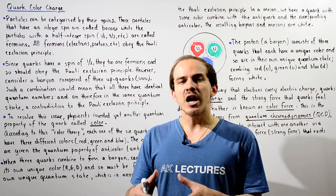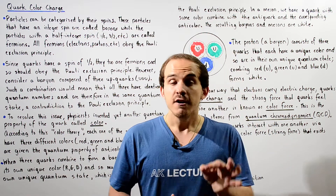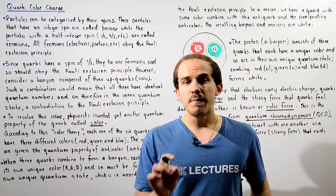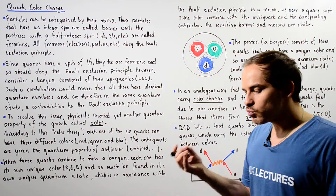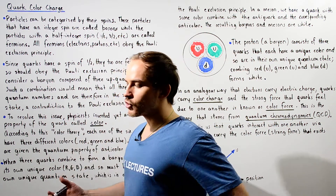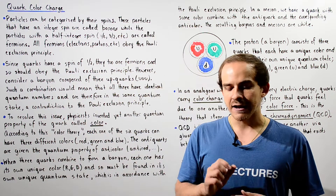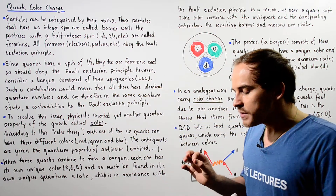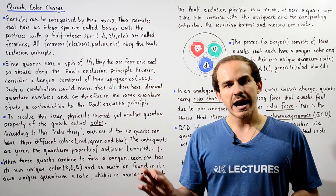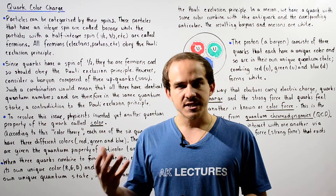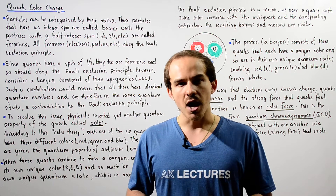Now, bosons do not need to obey the Pauli exclusion principle. However, fermions must obey the Pauli exclusion principle. For example, the electron is one example of a fermion. The electron can have a spin of negative one-half or positive one-half. And we know that whenever we have an electron in any given atom, that electron has its own unique quantum state designated by the various types of quantum numbers.